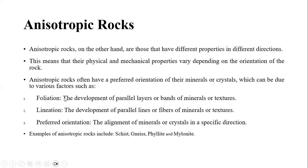When you're looking at anisotropic rocks, they have different properties in different directions. Their physical and mechanical properties vary depending on the orientation of the rock. Anisotropic rocks therefore do not have uniform textures — they have heterogeneous textures. They also have what you call a preferred orientation, such as foliations and lineations, as mentioned previously.